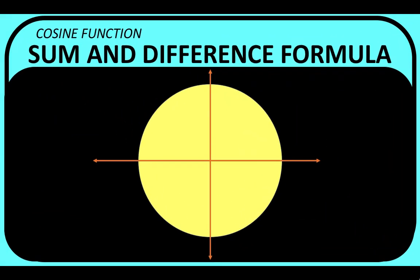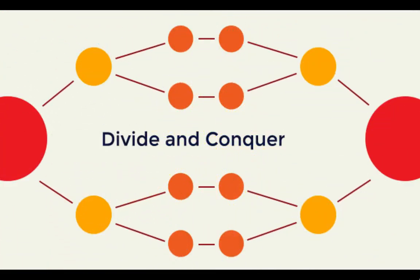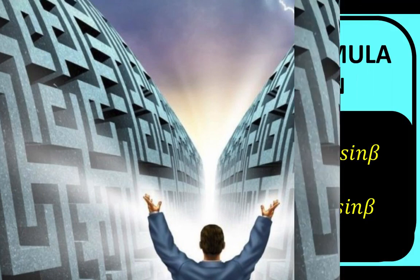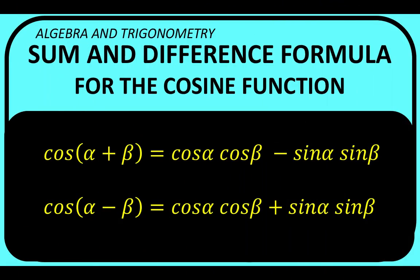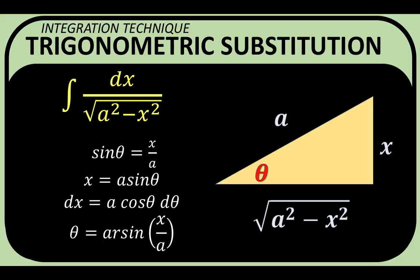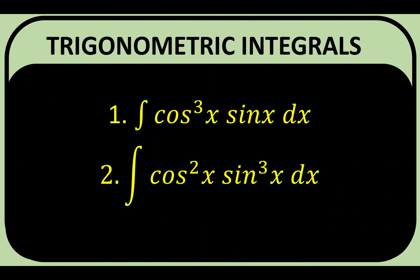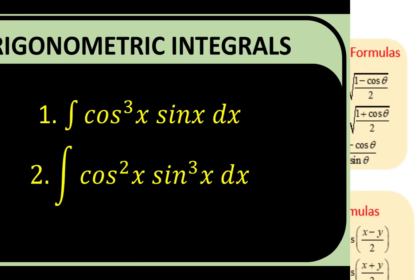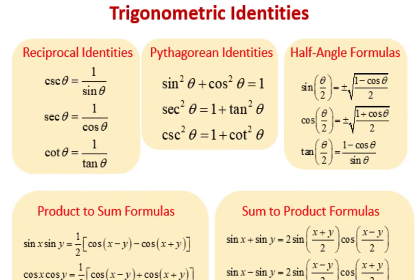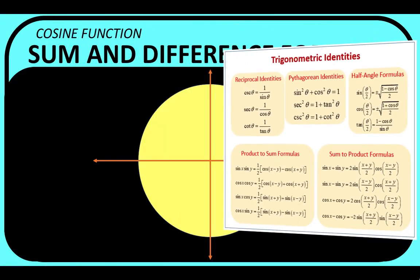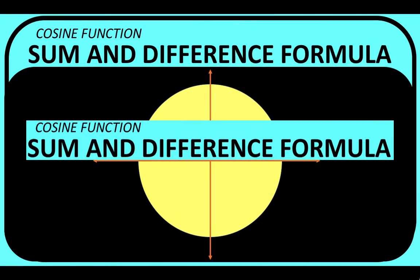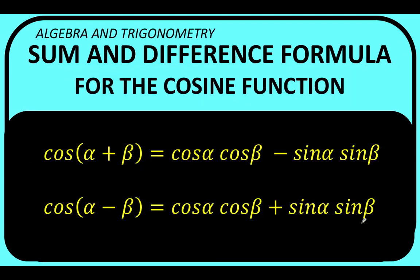Welcome back to our series on trigonometric identities. Divide and conquer is one of the more common strategies used by mathematicians in trigonometry. Breaking up an angle into the sum or difference of more familiar angles can help simplify a problem. For those of you watching our series on trigonometric integrals and integration by trigonometric substitution, familiarity with trigonometric identities is crucial for success in higher mathematics. In this lesson, we are going to talk about the sum and difference identities of the cosine function.